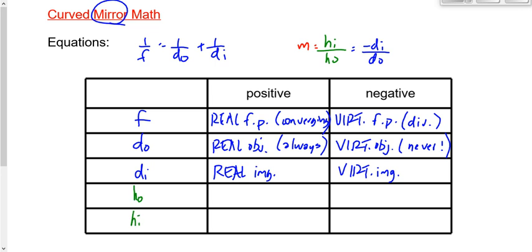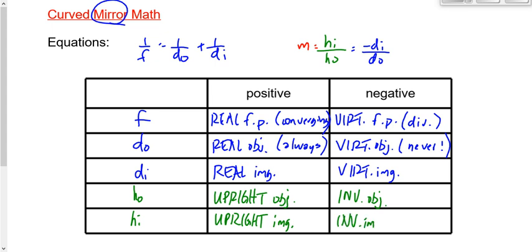H_O and H_I are positive or negative based on upright or inverted. H_O is positive if it's an upright object, which is almost always the case. H_I is positive if you have an upright image, negative if you have an inverted image. A helpful pattern to remember: a virtual image is always upright, and a real image is always inverted. So if the ray diagrams or patterns tell you it's a real image, you know it's upside down, and therefore H_I would be negative.